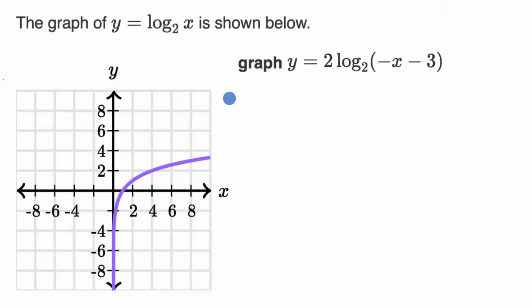So what we already have graphed, I'll just write it in purple, is y equals log base two of x. Now the difference between what I just wrote in purple and where we want to go is, in the first case, we don't multiply anything times our log base two of x, while in our end goal, we multiply by two. In our first situation, we just have log base two of x, while in here, we have log base two of negative x minus three.